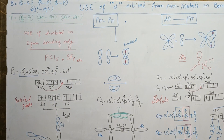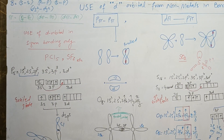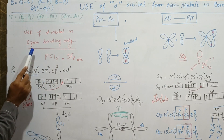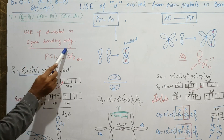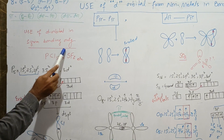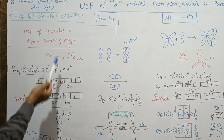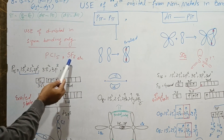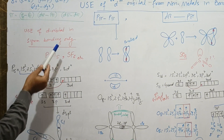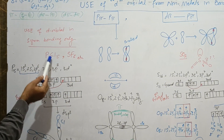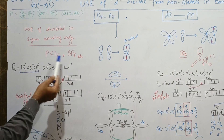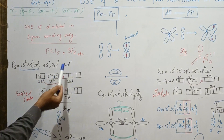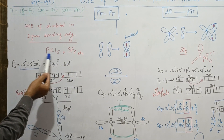Now let's see the use of d orbitals in sigma bonding only — meaning non-metals use d orbitals in sigma bonding. Examples of this type of bonding include PCl5 and SF6. I will explain PCl5.